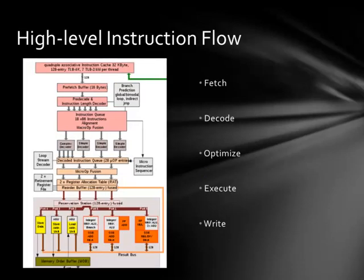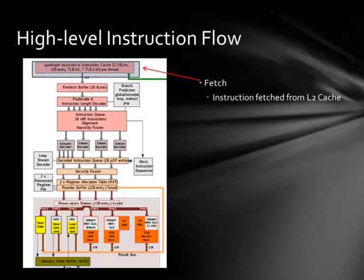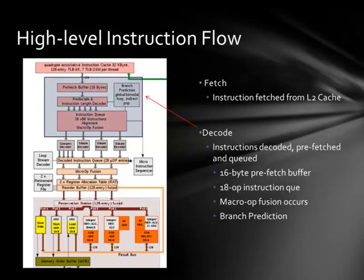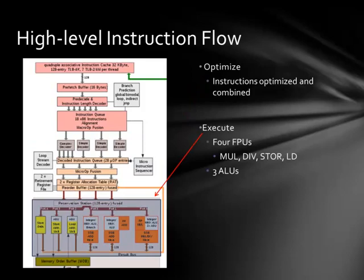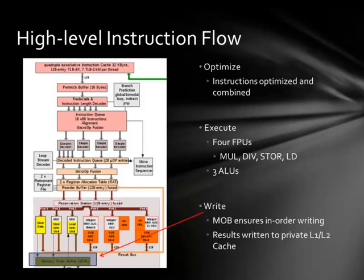To summarize how an instruction flows through a Nehalem architecture CPU, it goes through five primary stages: fetch, decode, optimize, execute, and write. First, we fetch the instruction from the L2 cache. Then we decode the instruction — this is where macro fusion occurs and branch prediction is attempted. We optimize instructions by attempting micro fusion so multiple operations can be fused into a single one. We execute the instruction through the four FPUs, the multiply, divide, store/load, and three ALUs. Finally, we write the result back to memory, and the memory order buffer ensures in-order writing with results written to a private L1 and L2 cache.